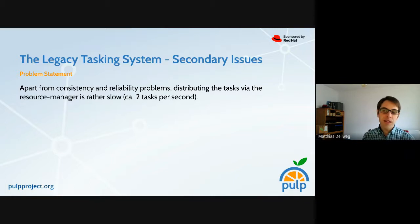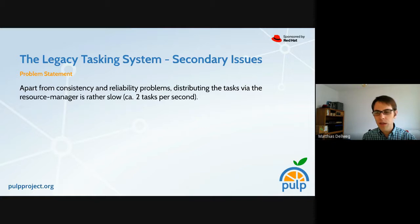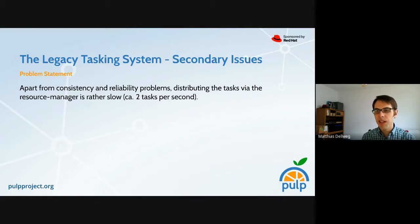Apart from the consistency problems arising from tasks being represented in two databases at the same time, we also identified that the resource manager is a rather slow thing. At some point we saw it was able to dispatch about two tasks a second. If you have fast-running tasks and you add more workers, you just don't get any more speed-up, because two tasks per second was the bottleneck — the resource manager.